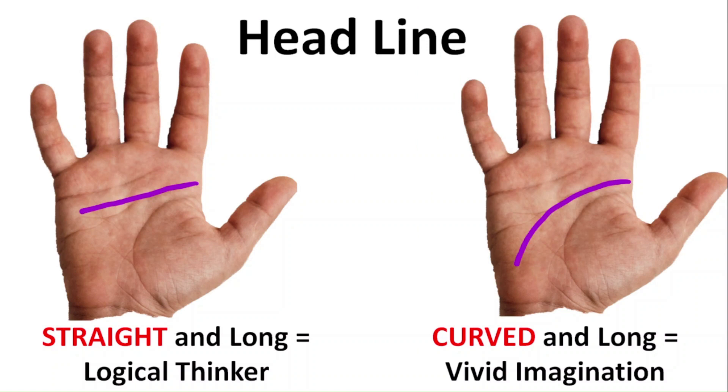Applying the same idea to the lines on the hands, we'll take a look at the headline highlighted in purple. Looking at the hand on the left, a person with a straight and long headline that ends underneath the little finger are logical thinkers that are good in math and the sciences.